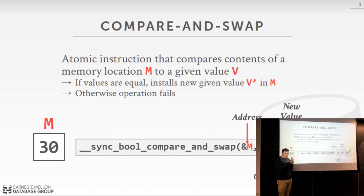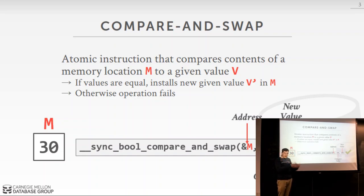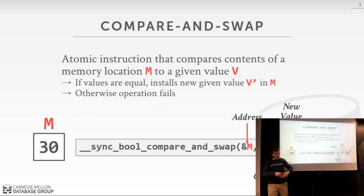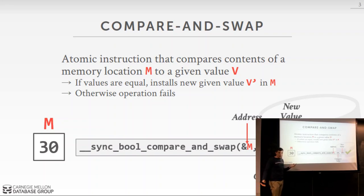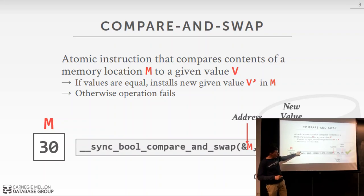The core idea is that this is literally a single CPU instruction. If you had to use a mutex to do this, you'd have to acquire the mutex, check the current value, install the new one, and then release the mutex. As I said, mutexes are the Hitler of concurrency, so we want to avoid them — compare and swap is much better.